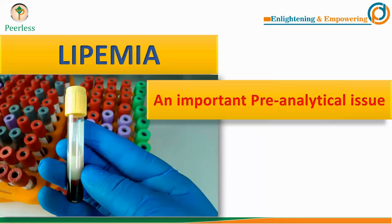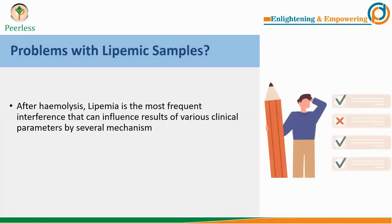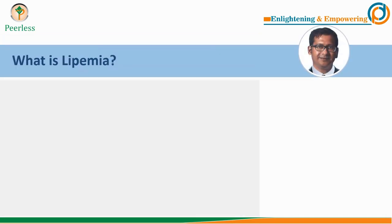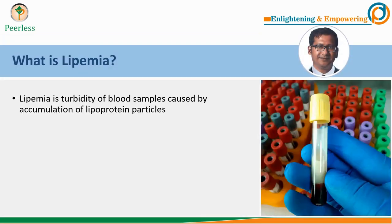Good morning friends. You are already aware that in clinical laboratory settings, interferences can be a significant source of pre-analytical laboratory errors. After hemolysis, which was discussed in the last session, lipemia is possibly the most frequent interference that can influence various biochemical parameter results through several mechanisms. Today we are going to discuss what is lipemia, what are the possible reasons for lipemia, which parameter results can be wrong and why, and how to detect and handle lipemic samples.